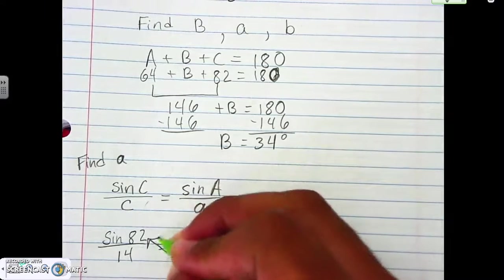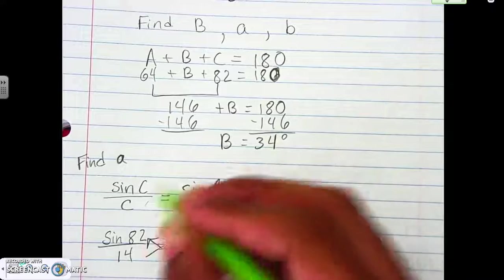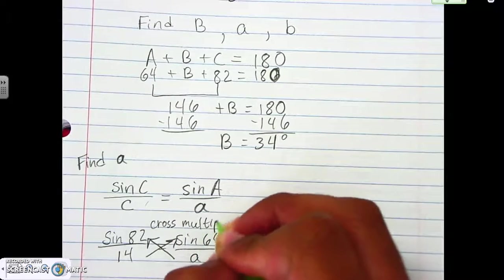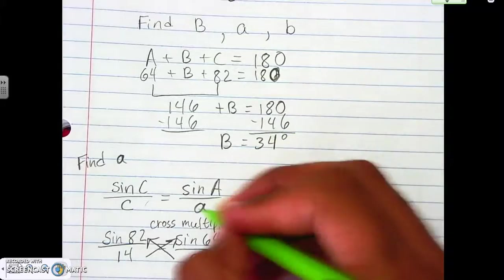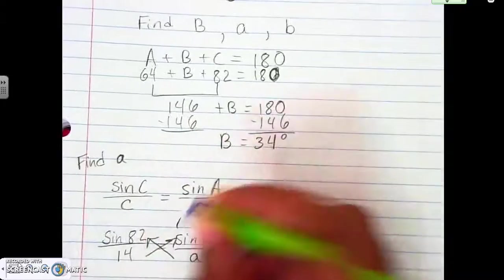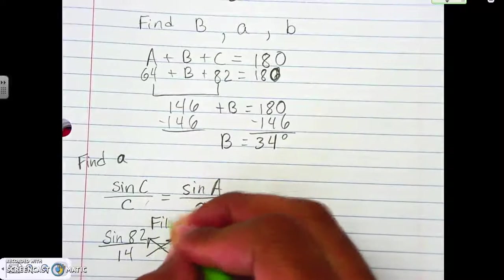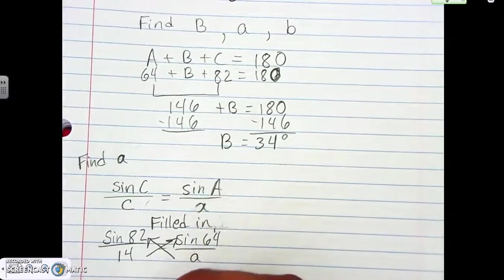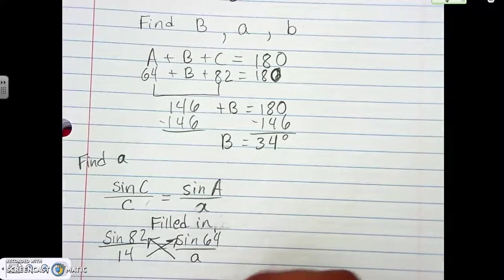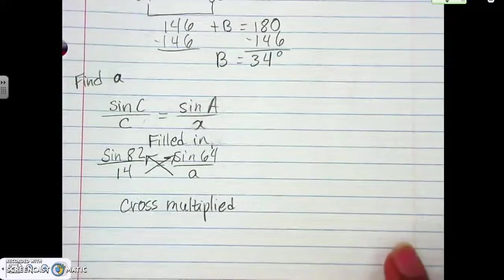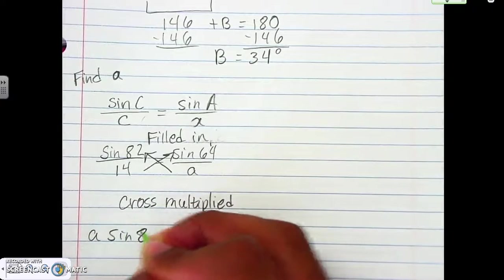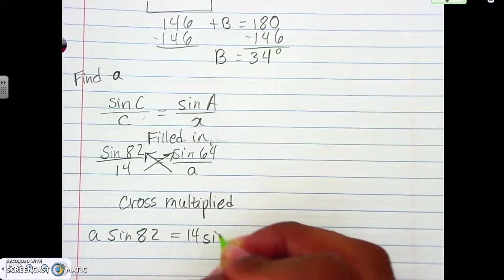We cross-reduce, cross, sorry, cross-multiply. Why do I keep saying cross-reduce? Cross-multiply. So we filled it in here. Let's do this part. Let's say filled in. We filled in. Then we cross-multiply. And cross-multiply. And so here, they give us A sine 82 equals 14 sine 64.